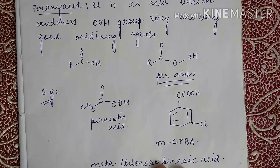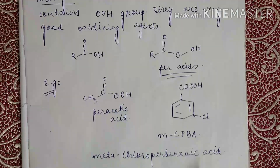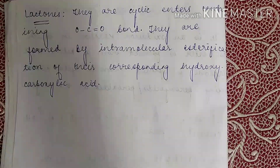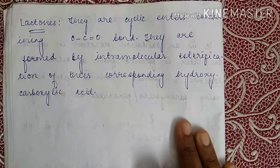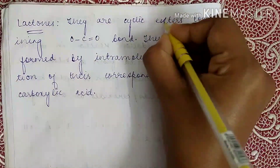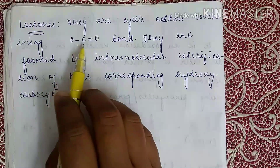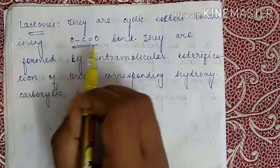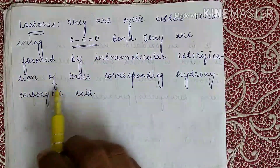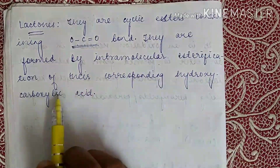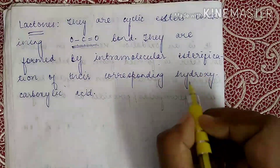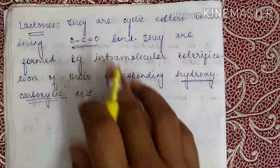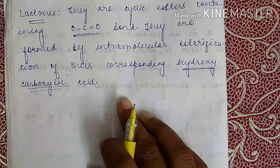So those were some of the examples of peroxy acids — they are very good oxidizing agents. Now let's see what are lactones. They are cyclic esters containing an O-C(=O) bond. They are formed by intramolecular esterification of the corresponding hydroxy carboxylic acids.